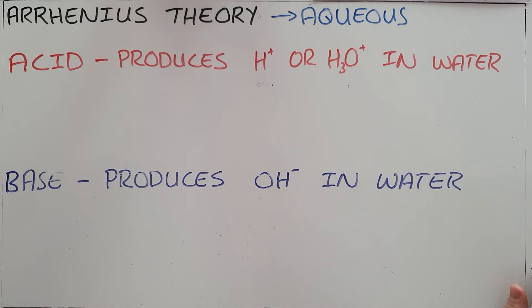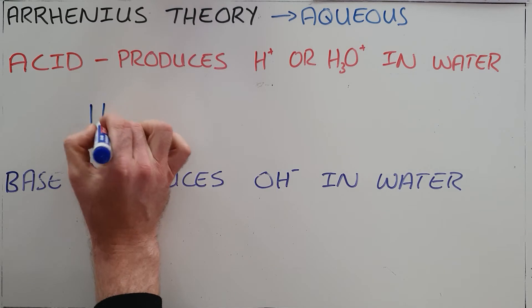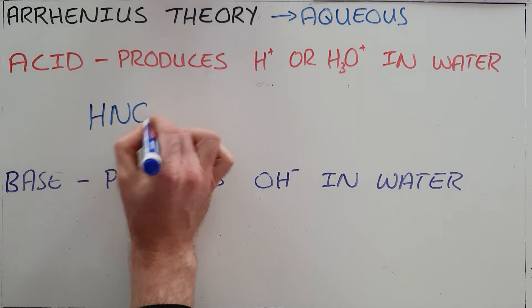So the Arrhenius theory defines an acid as any substance that produces hydrogen or hydronium ions in water. We know that this happens through the process called ionization.